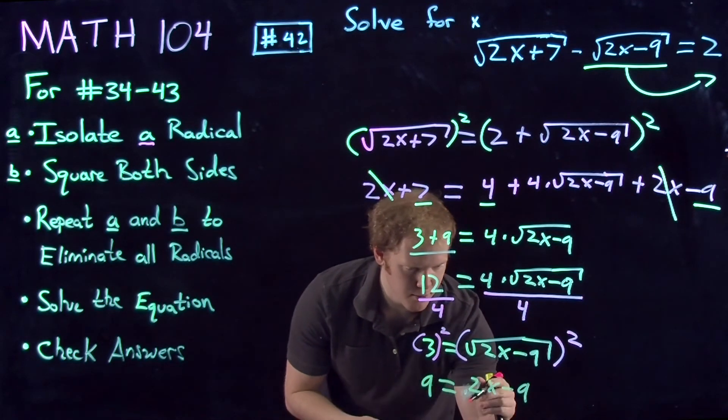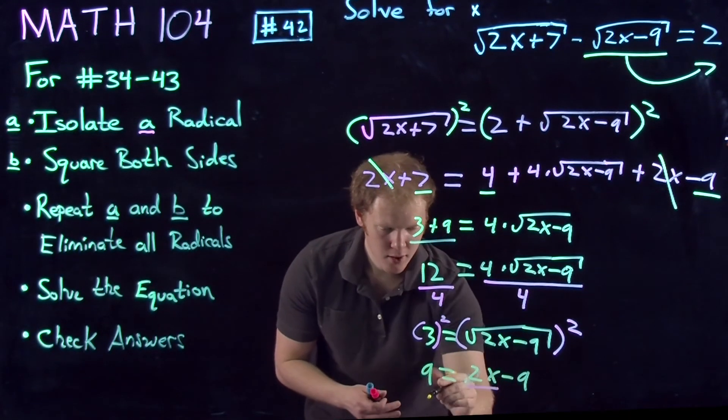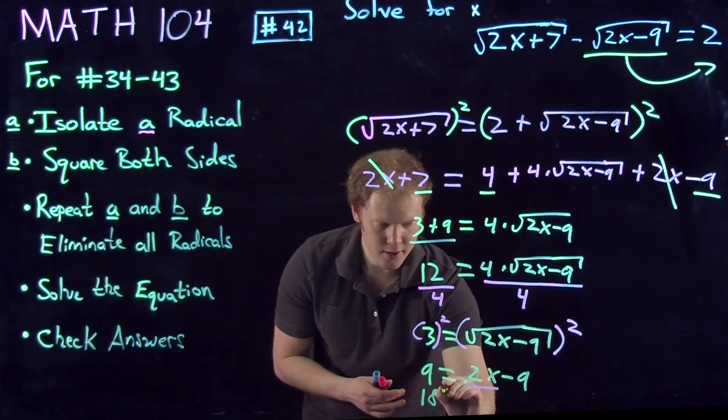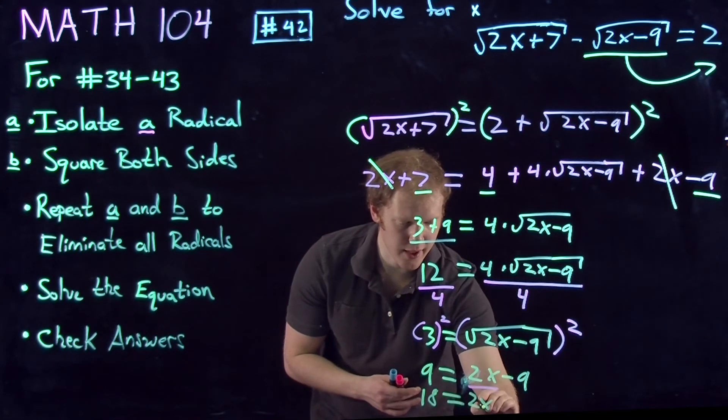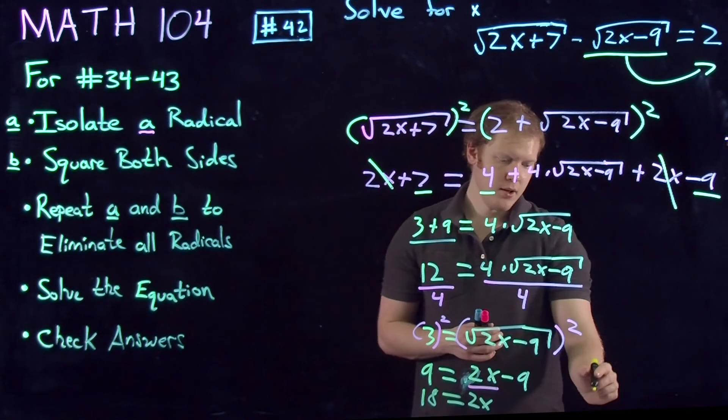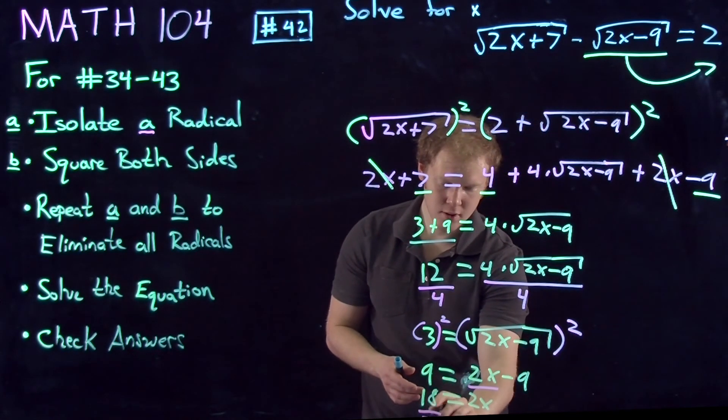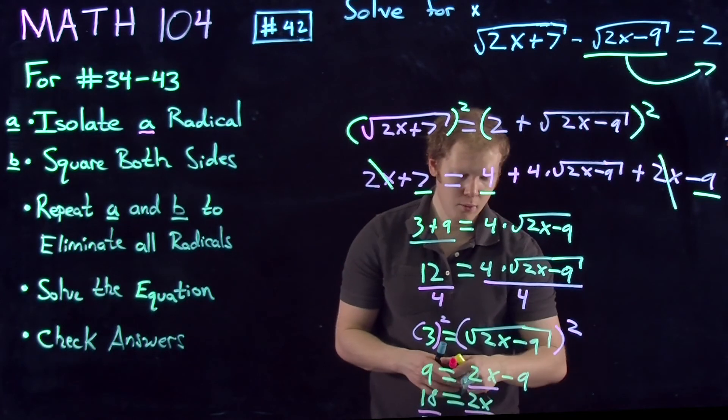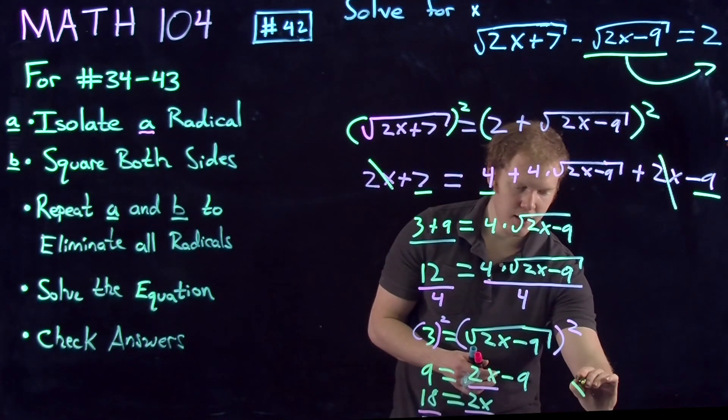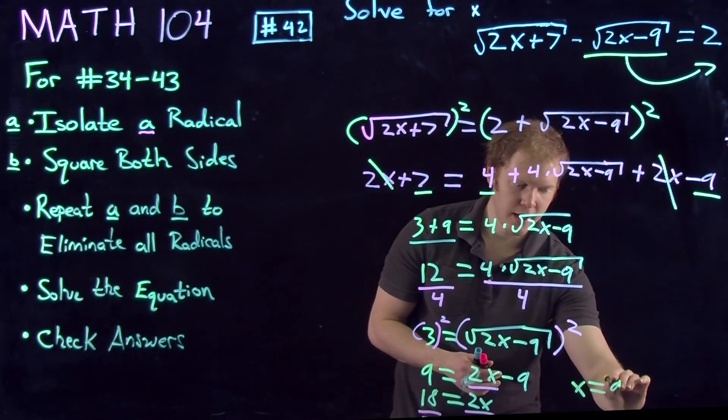Isolating the variable x one more time, we get 18 equals 2x. We divide by 2, and we get that x equals 9.